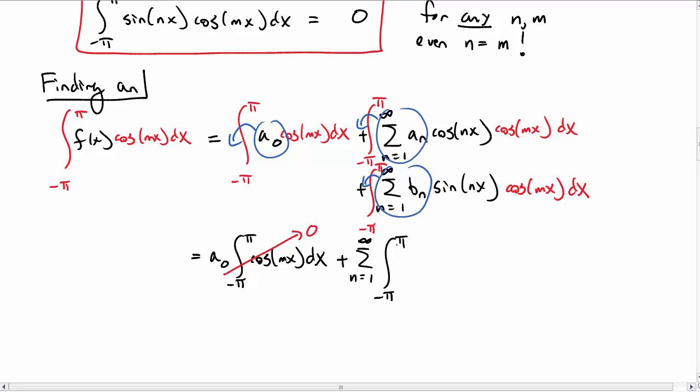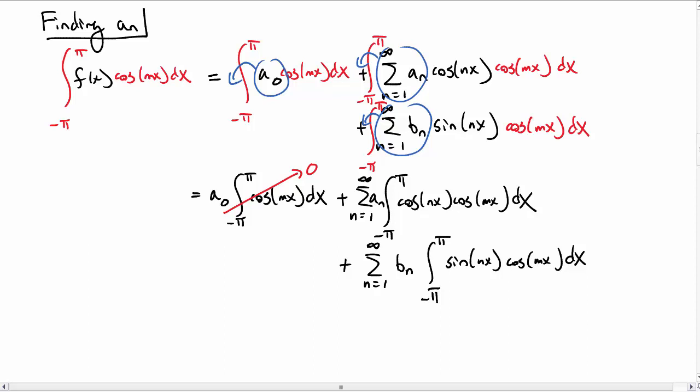Then I have a sum of the a sub n's, integral negative π to π, cosine of nx, cosine of mx dx. We know what that is, but let's come back to it in a second. I have the sum of the b sub n's, integral from negative π to π, sine of nx, cosine of mx dx. And we know that these mixed integrals also vanish. So we can throw that out.